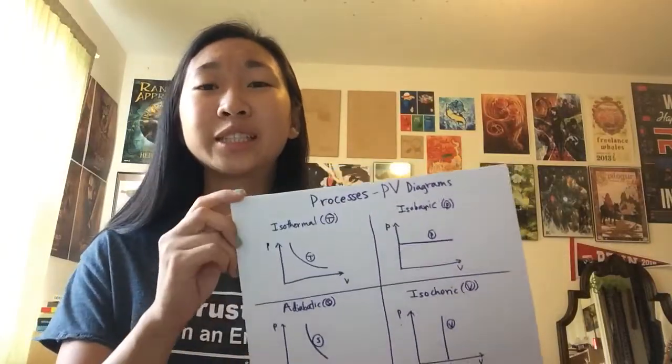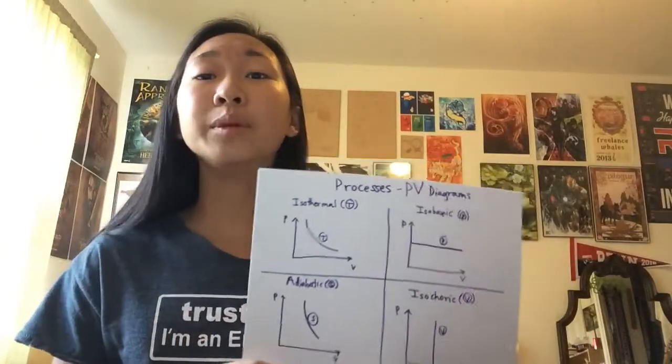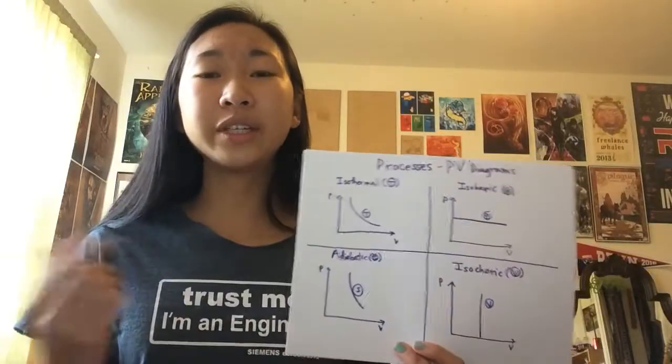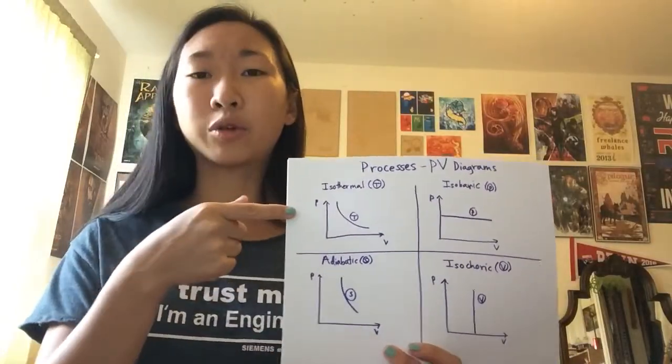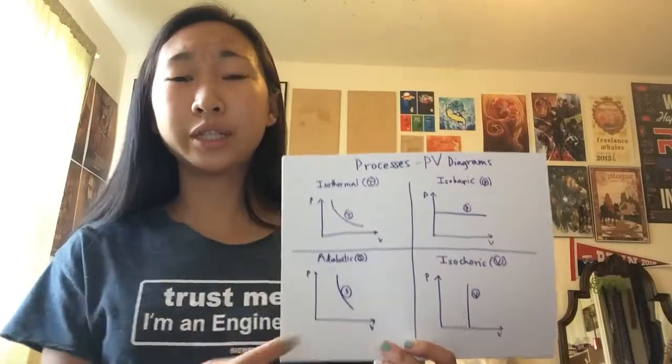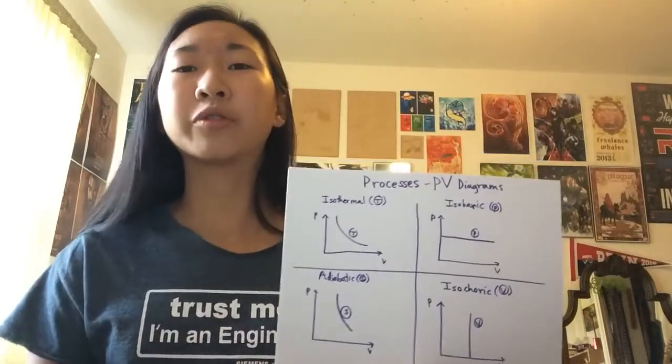First of all, many systems are idealized and these are the most common processes that are represented on these types of graphs. On a PV diagram, you're going to have the isothermal line, or a constant temperature line, shown as an inverse relationship between P and V, pressure and volume.